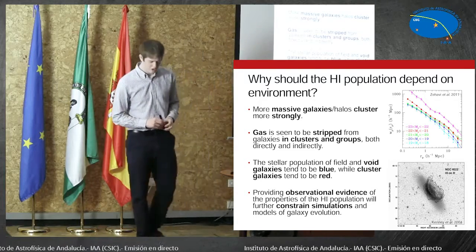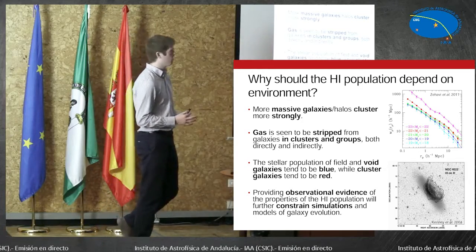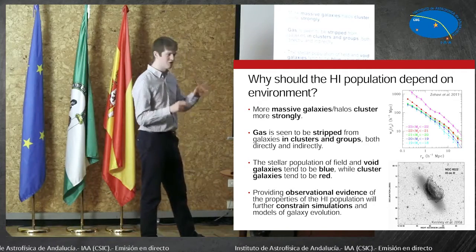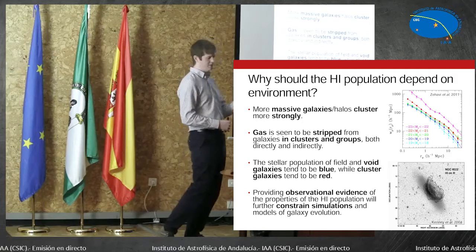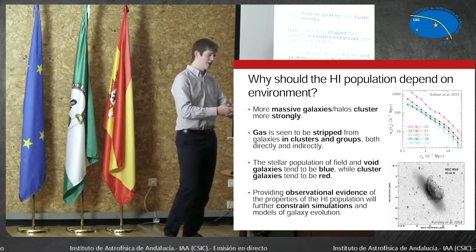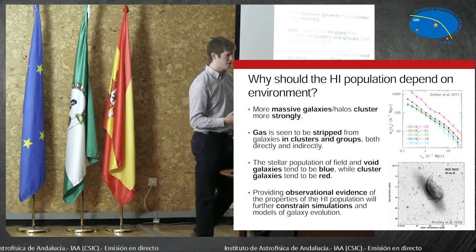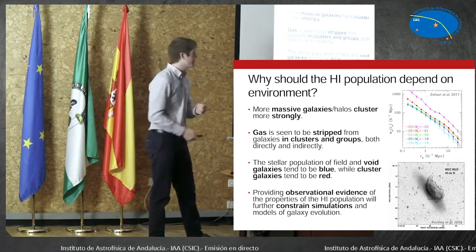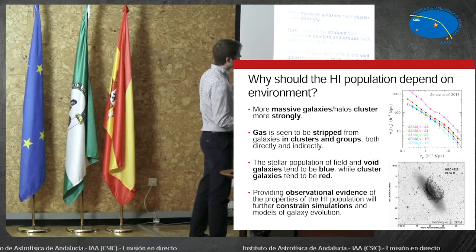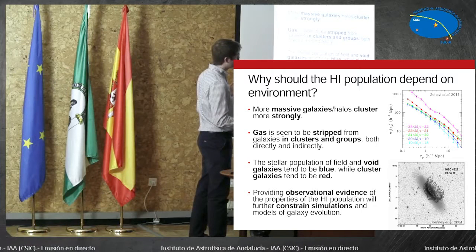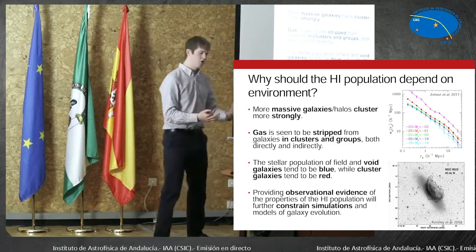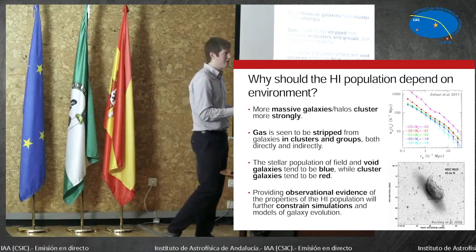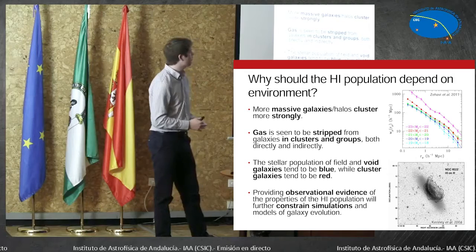Why should the H1 population vary with environment? There are a whole host of reasons. The first thing is that generally speaking, the larger a galaxy is, the more strongly it clusters with other galaxies. So galaxies that are in clusters tend to be bigger than small galaxies, which tend to be alone in the field. This is from the SDSS, showing that brighter galaxies are more strongly clustered together. So if you have a larger galaxy, presumably that's going to have an impact on how much mass it has, and so that's going to have some effect on the gas mass as well.